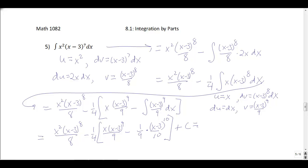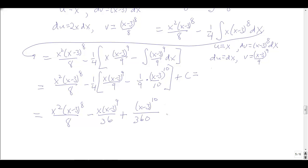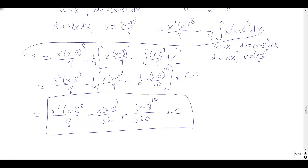Putting it all together and distributing the minus 1/4, I get x squared times x minus 3 to the 8th over 8, minus x times x minus 3 to the 9th over 36 — since 4 times 9 is 36 — plus x minus 3 to the 10th over 360 — since 9 times 10 times 4 is 360 — plus c. You could factor out x minus 3 to the 8th and simplify further, but we have an antiderivative, which is the point of the question.